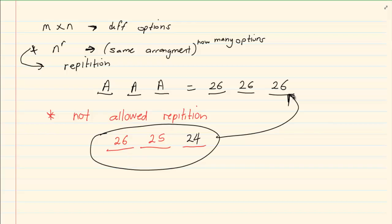When you are allowed repetition, you always had the same number of arrangements for every position. But when repetition is not allowed, did you realize that you did not have the same number of arrangements for every one? So you have 26, 25, 24.